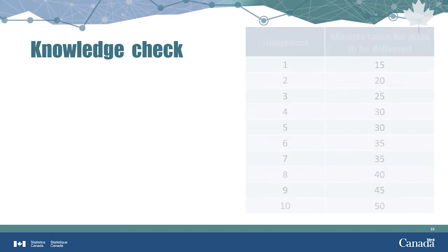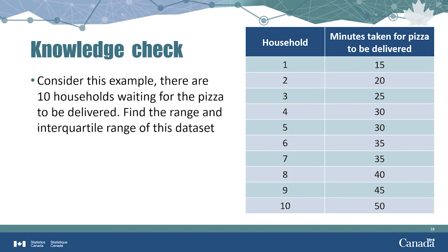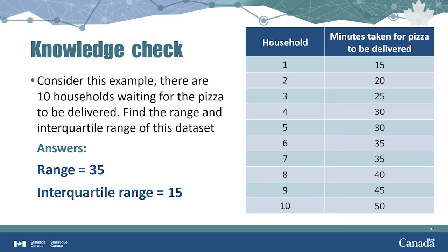Your turn. Imagine you have ordered a pizza and they tell you it should take around 30 minutes to be delivered, and 9 other households have done the same thing. Here we have a table showing exactly how long each of the 10 households had to wait. Pause the video and try to calculate the range of delivery times, then calculate the interquartile range. Did you get 35 for the range and 15 for the interquartile range? If so, good for you! Now we can move on to our next measure of dispersion — standard deviation.